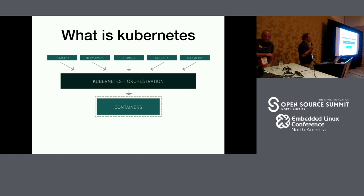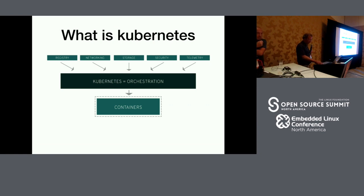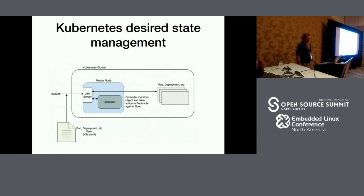If a container dies, Kubernetes will respawn and recreate a new one. When you need to scale up and your application grows in usage, Kubernetes will create many more containers on other physical or virtual servers, and similarly scale down when usage drops — so you reach a desired state where everything is running just fine.